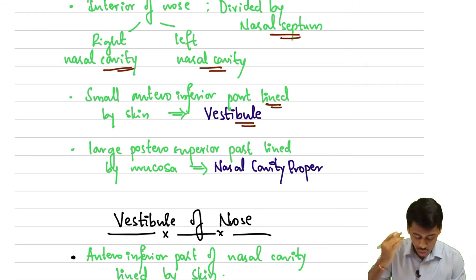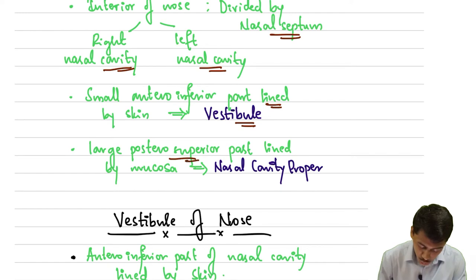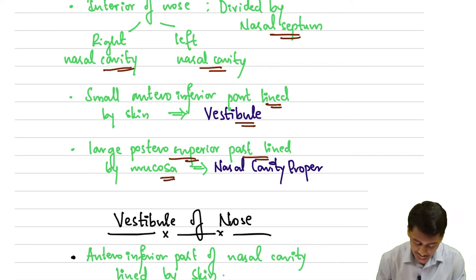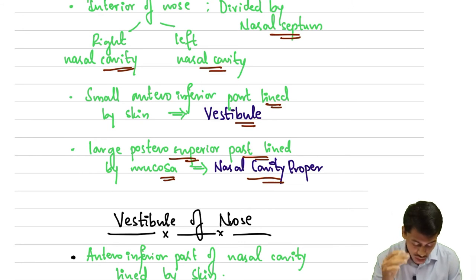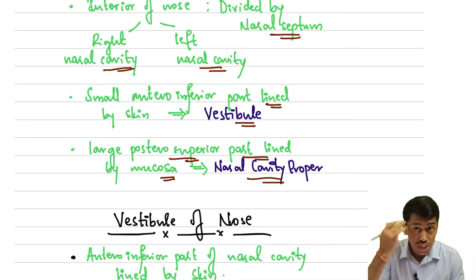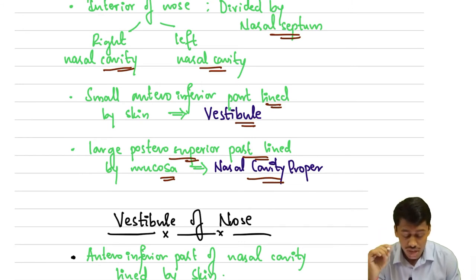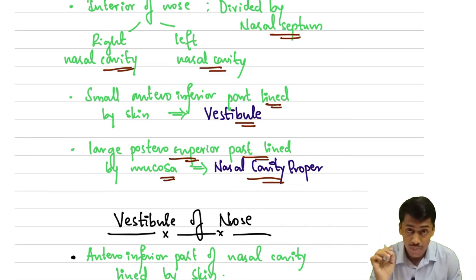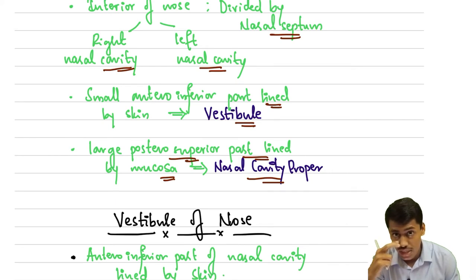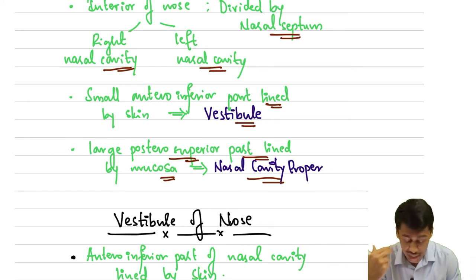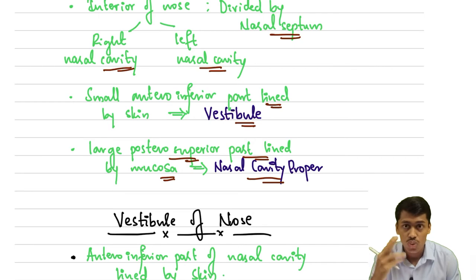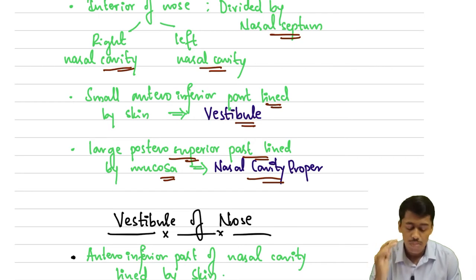As you go deeper, there is a large posterior superior part lined by mucosa, called the nasal cavity proper. The anterior one-third lined by skin is the vestibule of the nose, and the posterior portion is the nasal cavity proper.